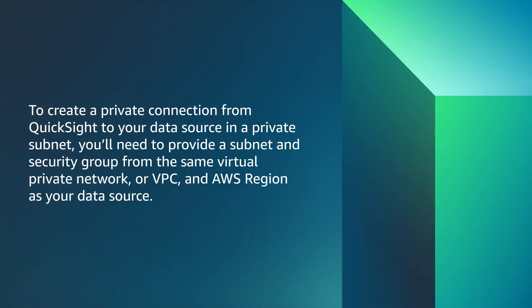To create a private connection from QuickSight to your data source in a private subnet, you need to provide a subnet and security group from the same virtual private network, or VPC, and AWS region as your data source.